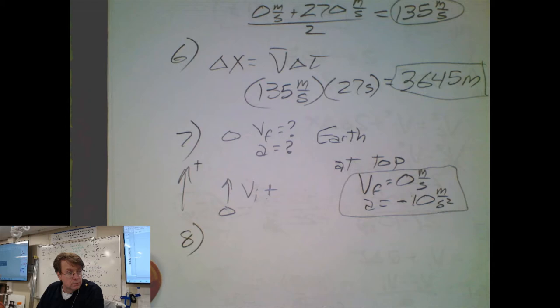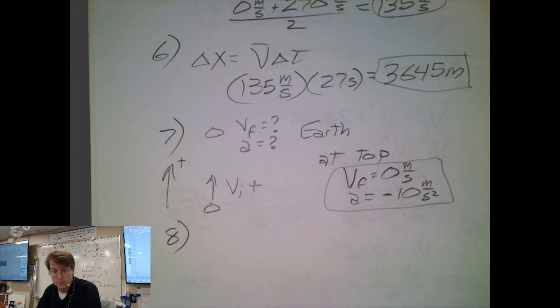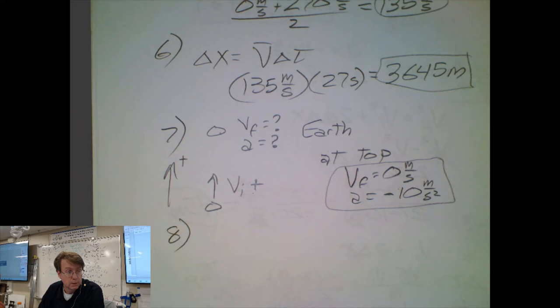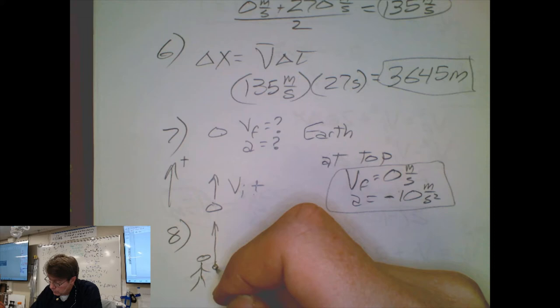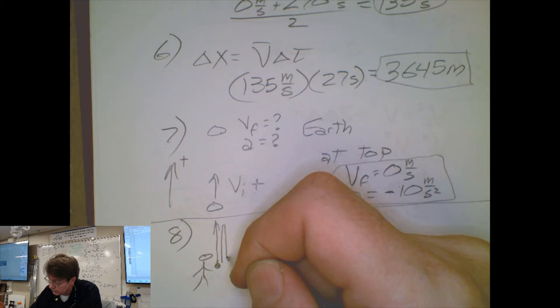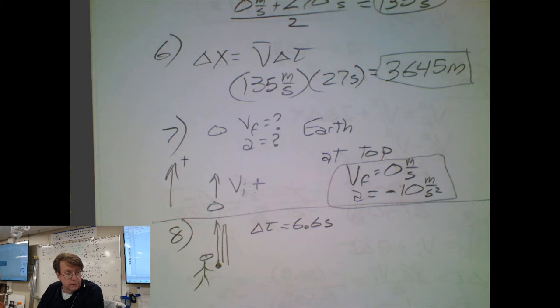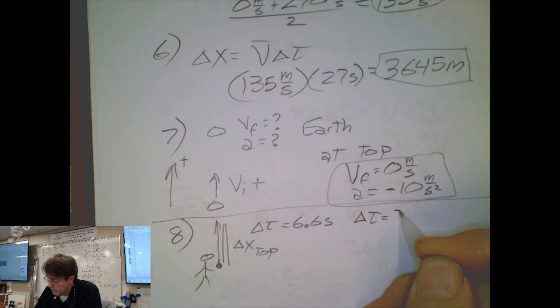Problem eight: during a baseball game, a batter hits a high pop-up. These are vertical, straight up-and-down problems. The ball remains in the air for 6.6 seconds total — that's a round trip from batter back to batter. The time to reach the top would be half of that: 3.3 seconds.